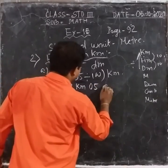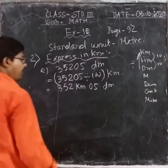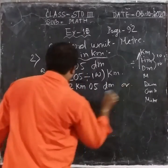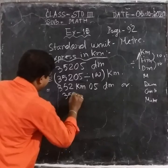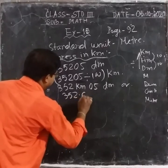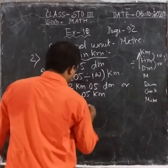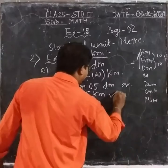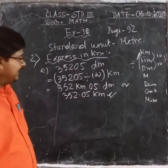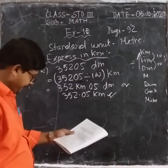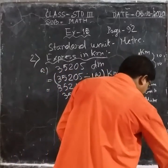So the answer is 352.05 Dekameter — or you can write it as 352.05 Kilometers. Both answers are right. Both answers are right. In the same way you have to do the other one.